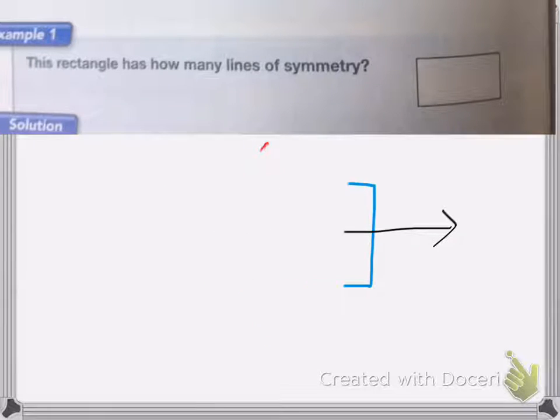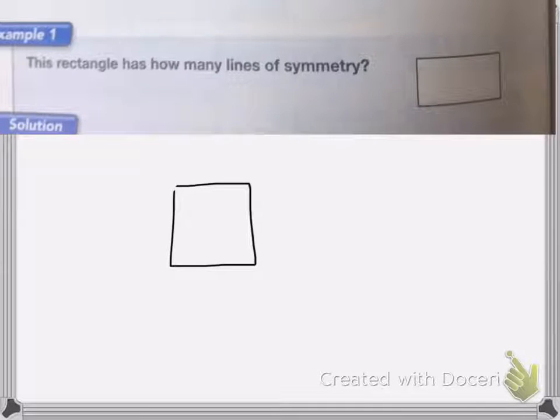A square actually has more lines of symmetry. If I draw a square as best as I can draw it, this square is actually going to have more lines of symmetry than a rectangle. It will have the same up and down, vertical and horizontal, but I also have a diagonal line of symmetry.